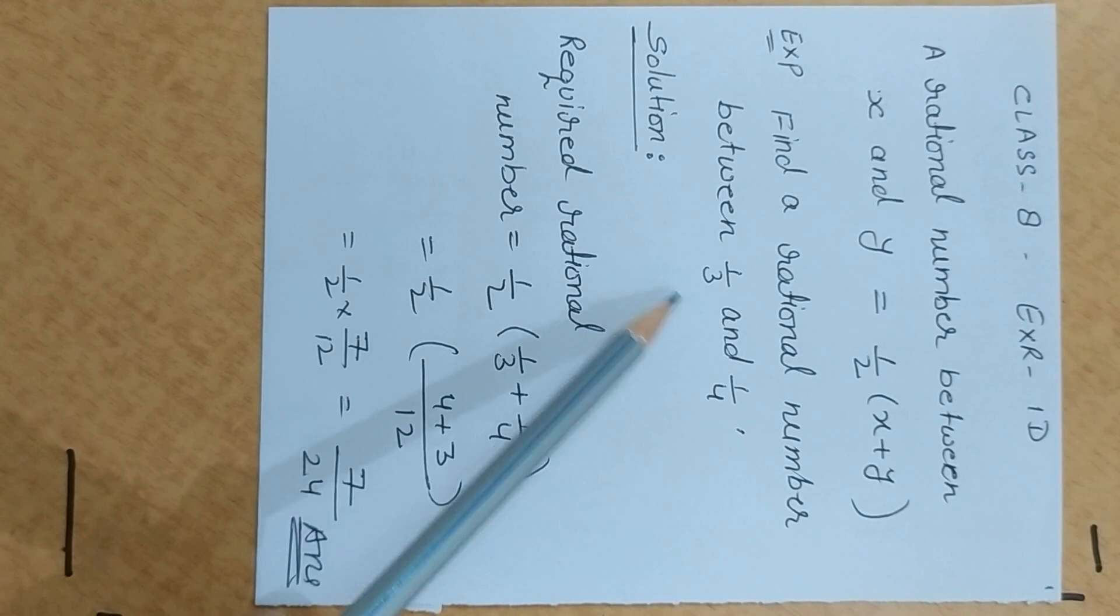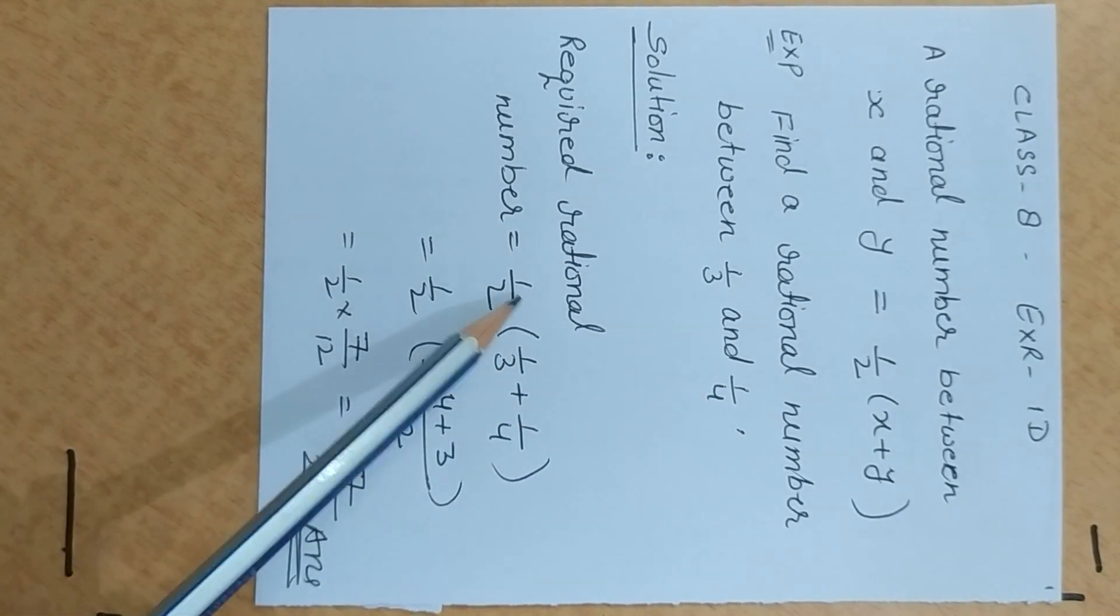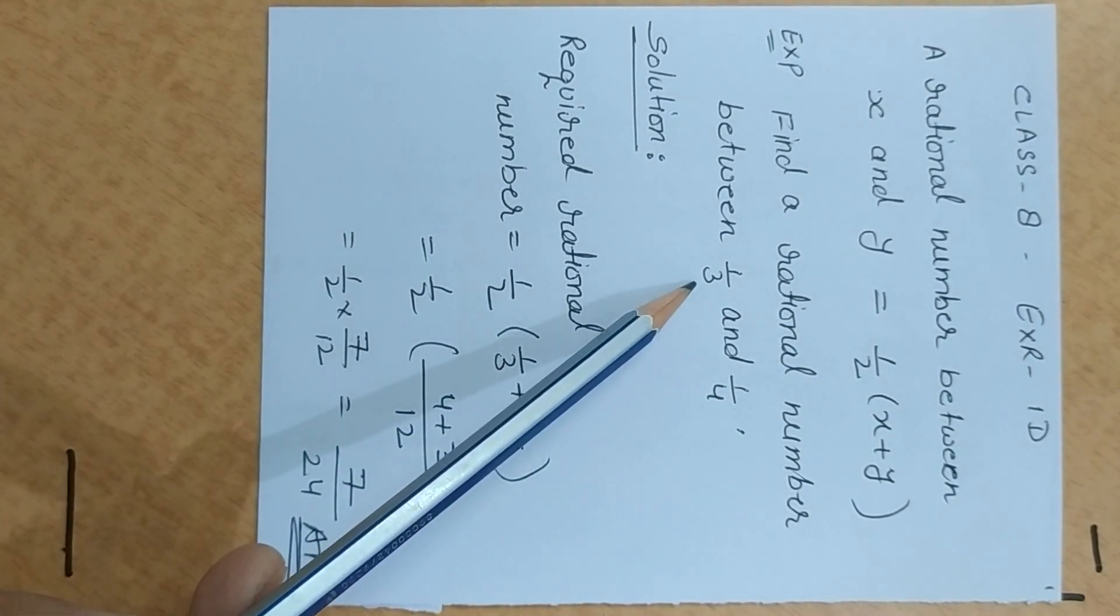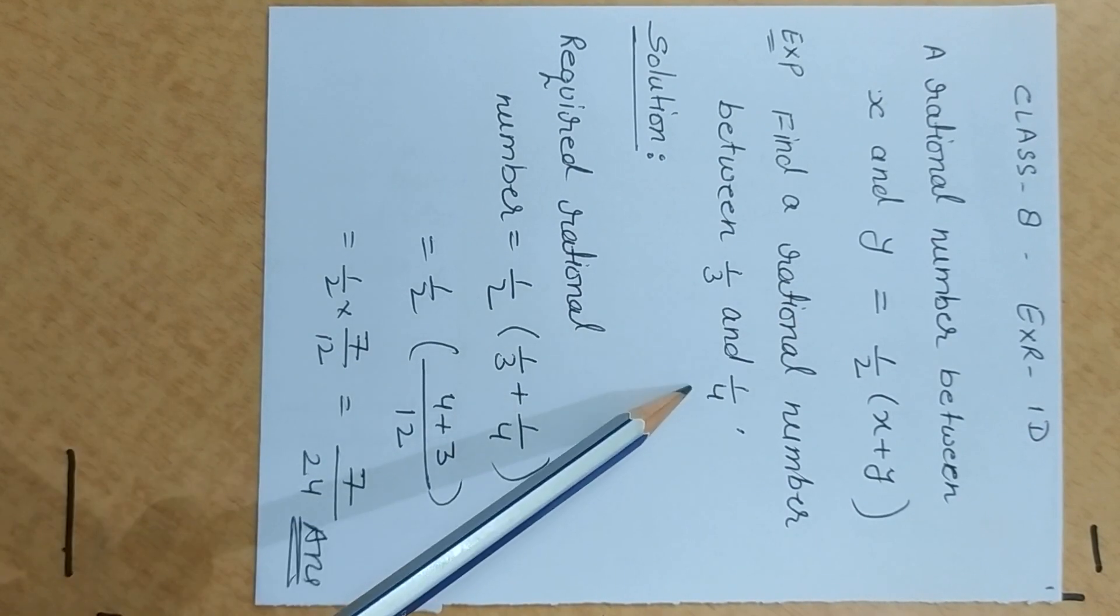Find a rational number between 1 by 3 and 1 by 4. What do we need to do? 1 upon 2. Suppose that x is 1st term and y is 1 by 4, 2nd term.